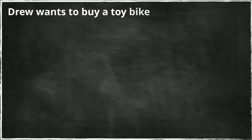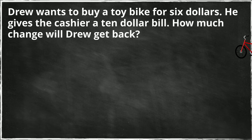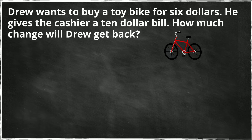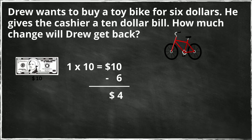Number three: Drew wants to buy a toy bike for six dollars and he gives the cashier a ten dollar bill. How much change will Drew get back? Drew has ten dollars total because a ten dollar bill represents ten one dollar bills. He buys the bike for six dollars, so ten minus six is four. He will receive four dollars in change.